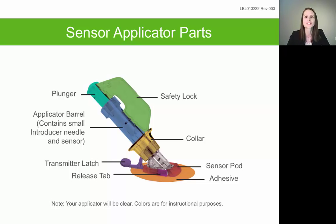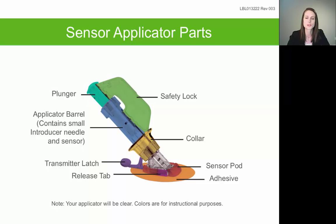After retracting the collar to the top of the applicator barrel, you'll need to remove the applicator barrel from the sensor pod using the release tabs, labeled in fuchsia — little ridged tabs with one on each side. Pinch those release tabs together and rock the applicator barrel out and away from the sensor pod, leaving just the low-profile sensor pod on your skin. You will then use the transmitter latch, labeled in purple, to insert the transmitter into the sensor pod on your skin.